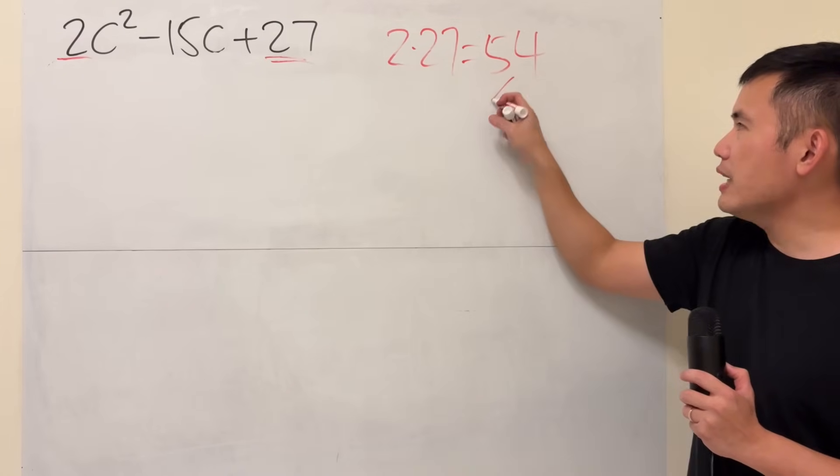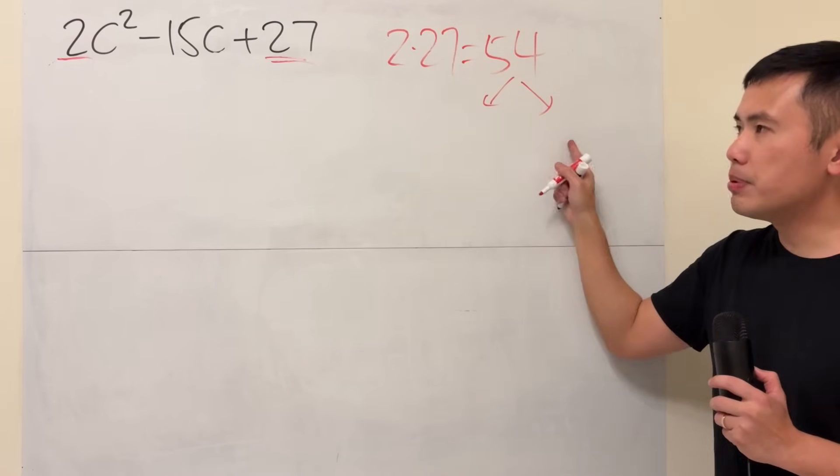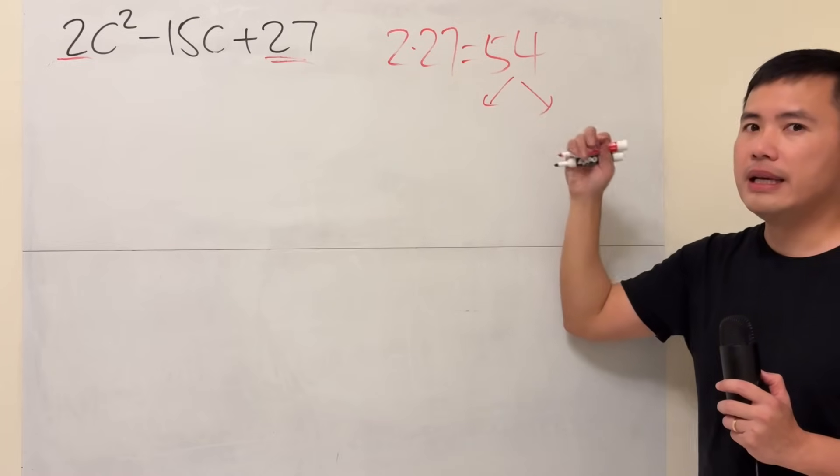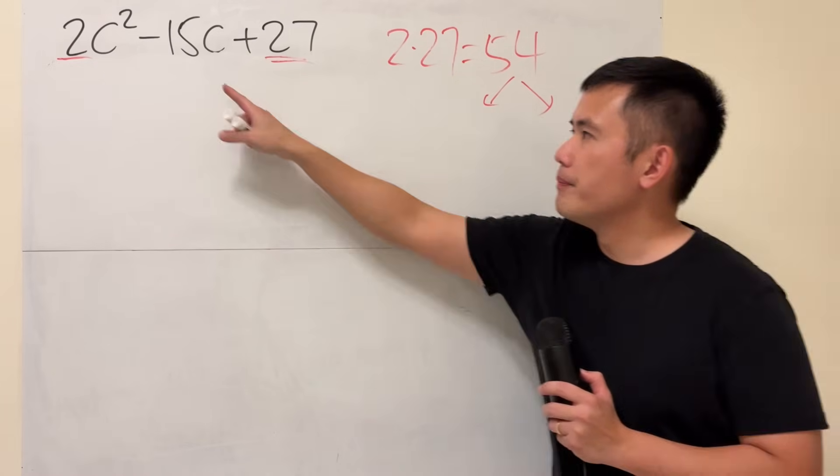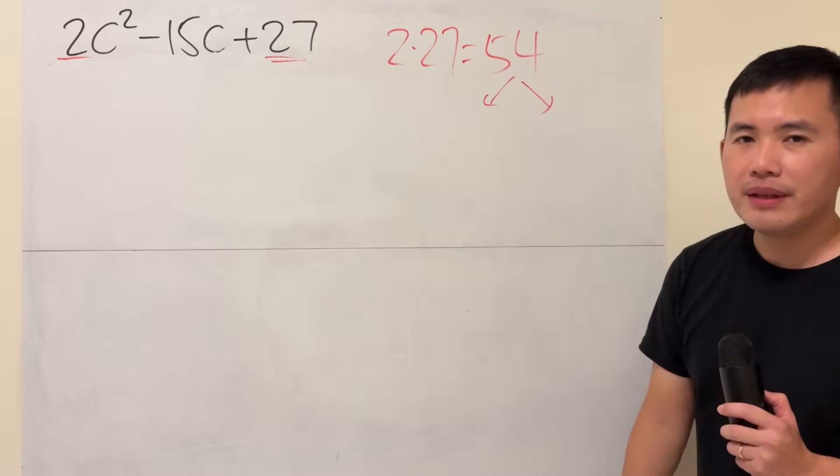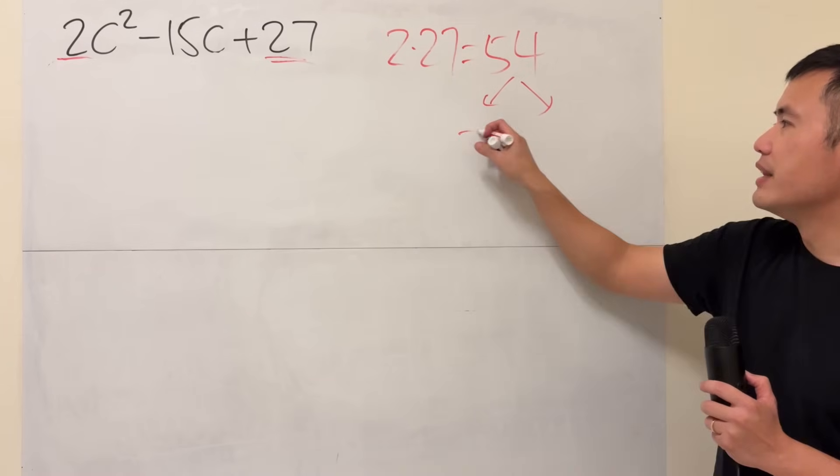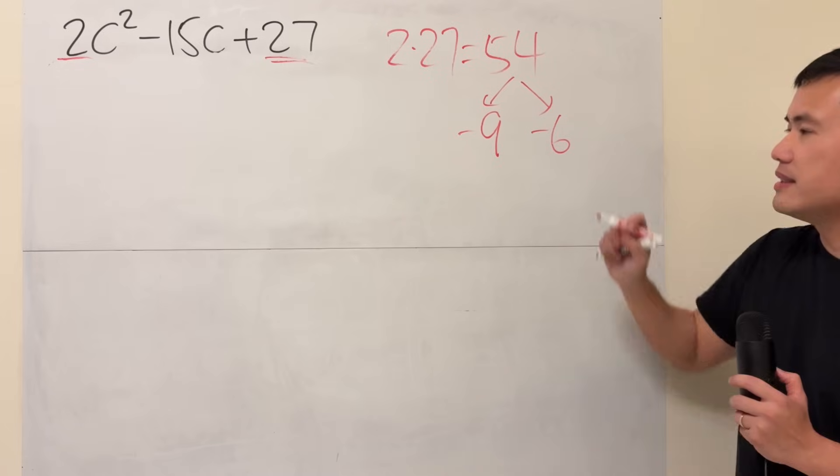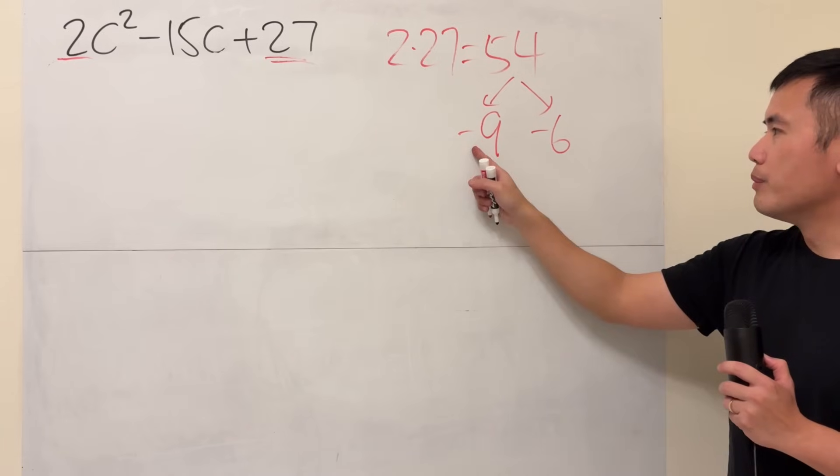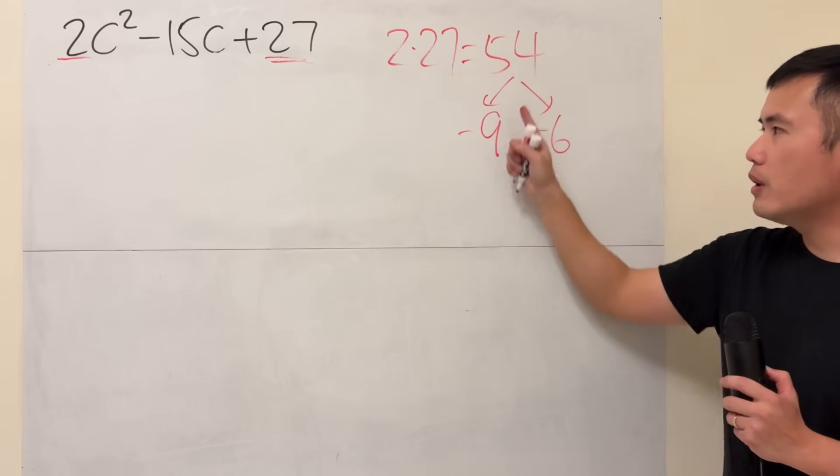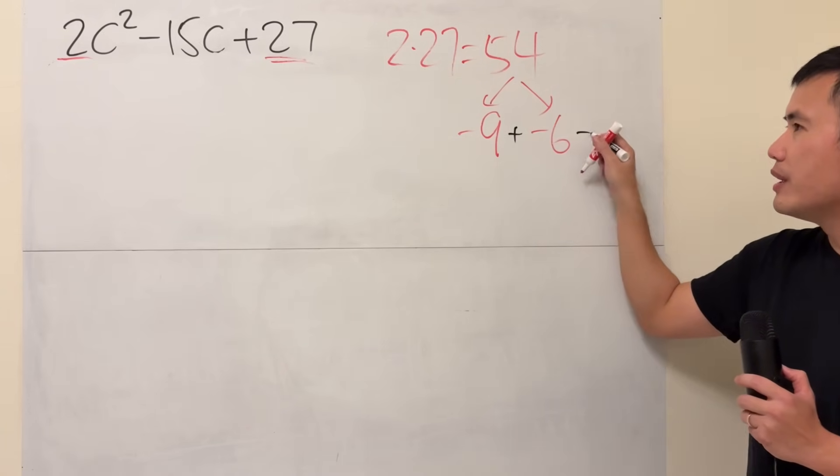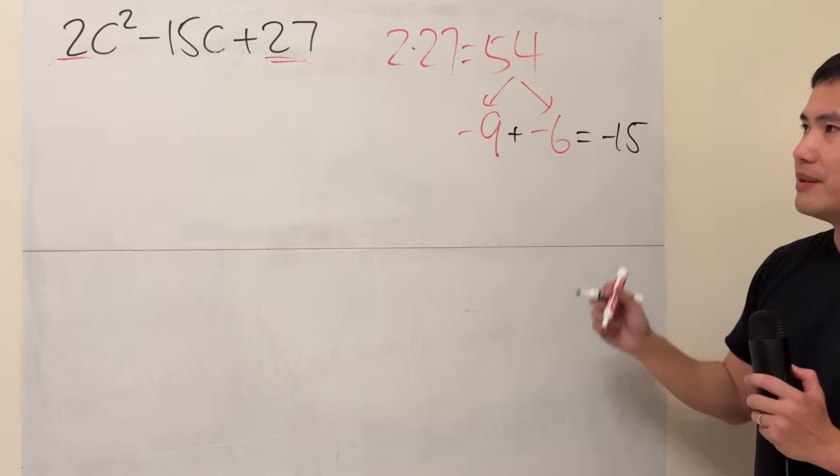And then you will have to think about two numbers that they multiply to be 54, together they add up negative 15. And you did a great job because you got negative 9 and negative 6. When we multiply them, we do get 54, and when we add them, we do end up with negative 15. Perfect.